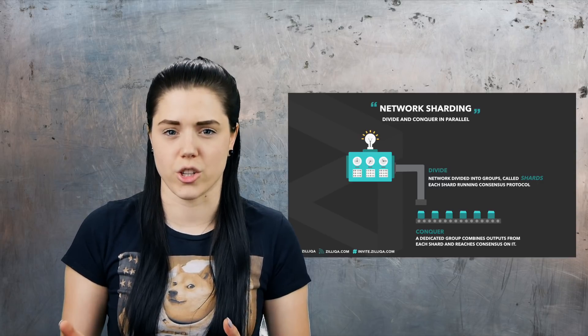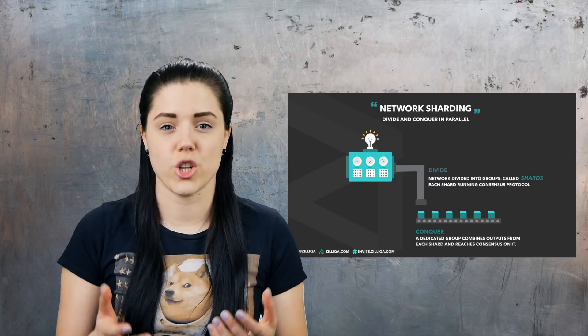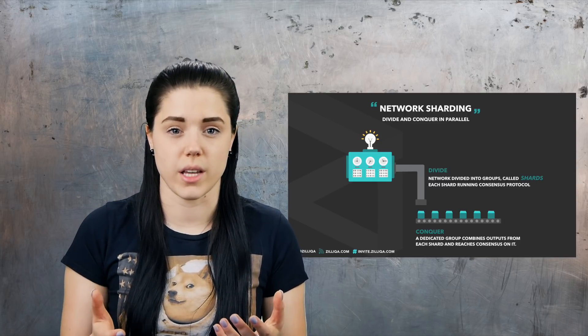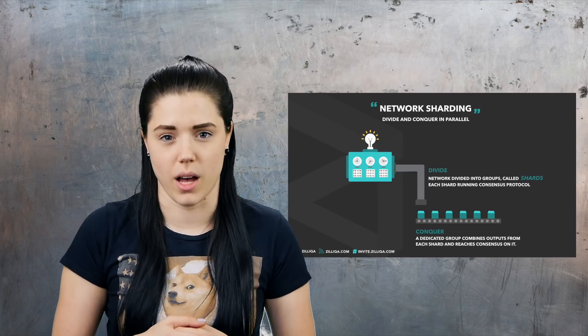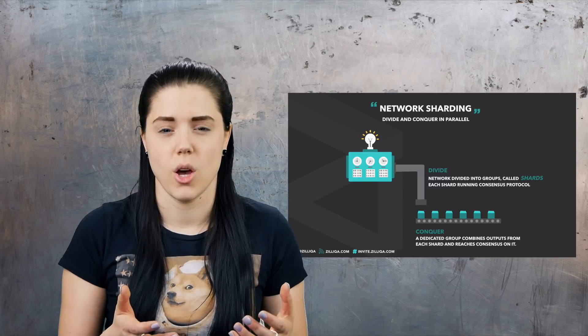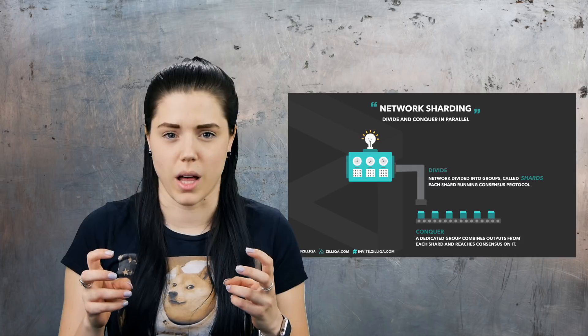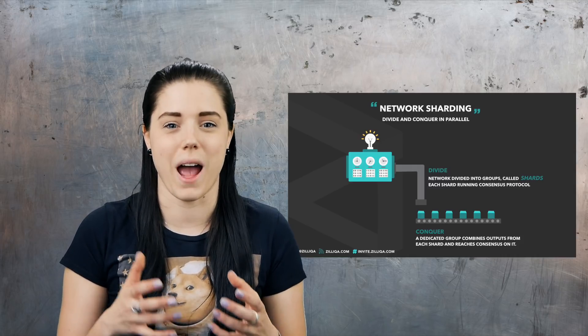Zilliqa uses proof of work only to prevent what's called Sybil attacks, which is a type of network attack based on the attacker forging their identity. I'm going to quote an article that explains how the Zilliqa blockchain works: a user initiates a transaction which is sent to a shard. The shard validates the transaction, grouping it with others to form a micro block, and a consensus is reached by the shard on the validity of the micro block. This micro block is then sent to the DS committee, which combines micro blocks into final blocks and runs a final consensus before adding it to the blockchain.